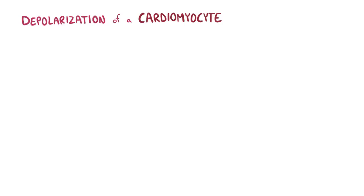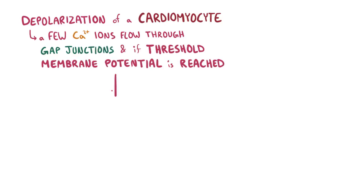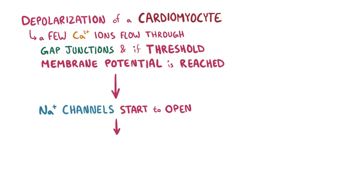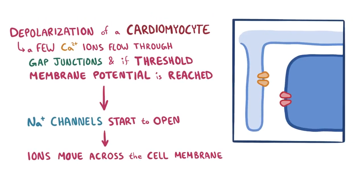When a depolarization wavefront hits a cardiomyocyte, a few calcium ions flow through gap junctions, and if a threshold membrane potential is reached, then sodium channels start to open up. If there's a depolarization, ions start to move across the cell membrane, and that's where the T-tubules play a key role. During the part of the cardiomyocyte action potential when calcium ions flow into the cell, the presence of T-tubules helps bring calcium deep into the cell.